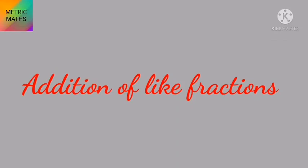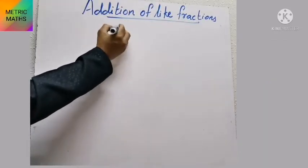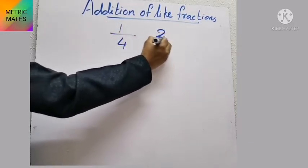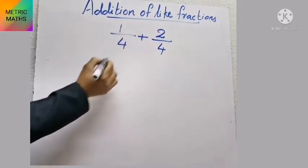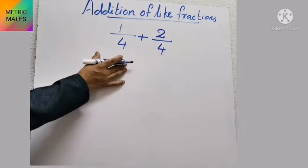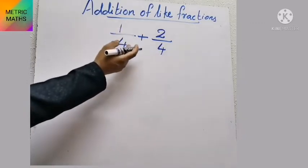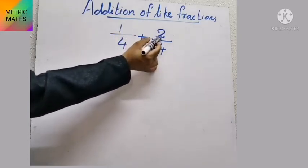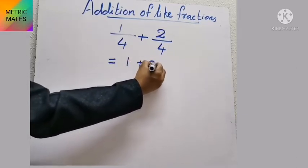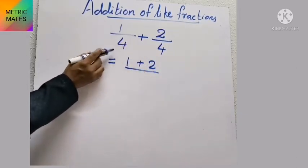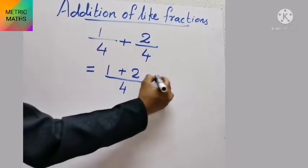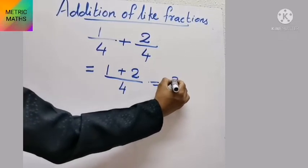Now let's look at addition of like fractions. For example, 1 by 4 and 2 by 4 — these are like fractions because the denominators are the same. For adding like fractions, just add the numerators. The numerators here are 1 and 2, so we get 1 plus 2 by 4. There is no need to add the denominators — just write the same denominator.